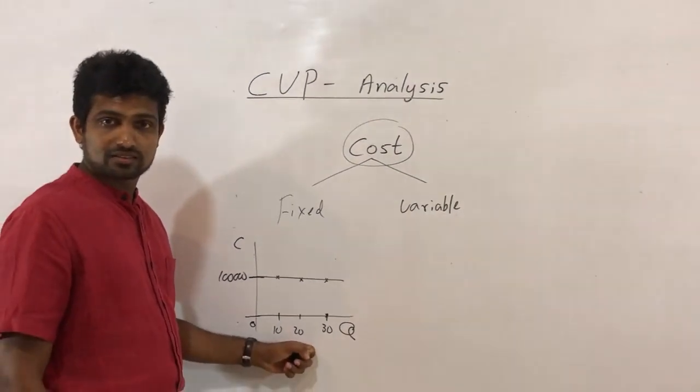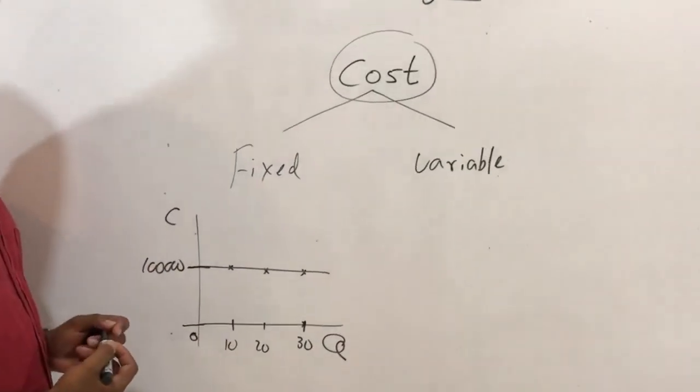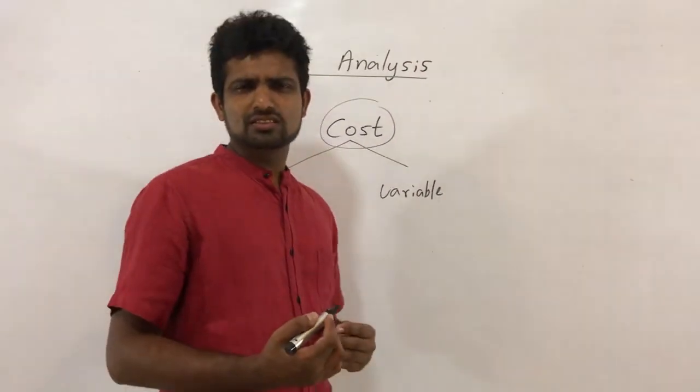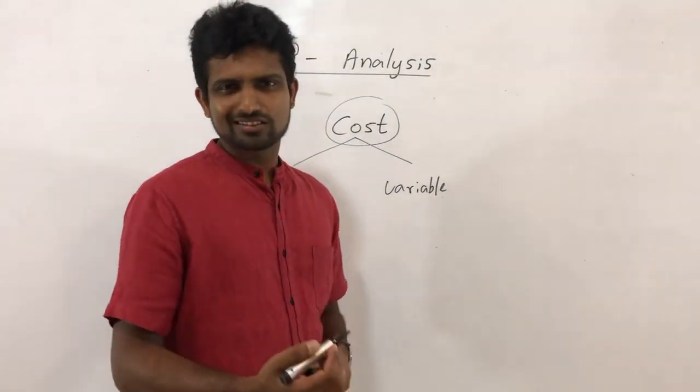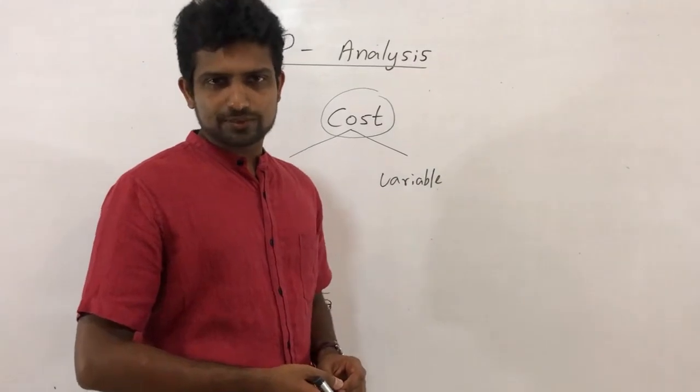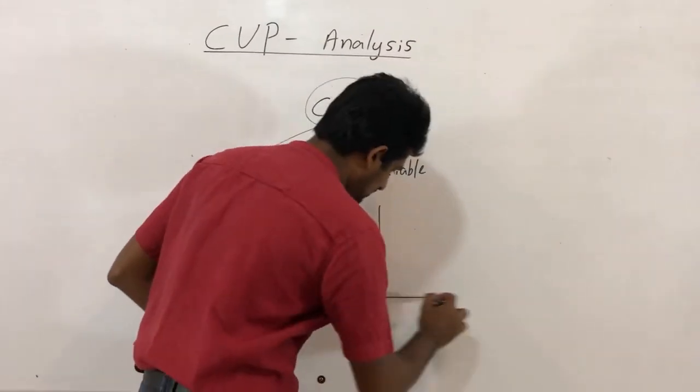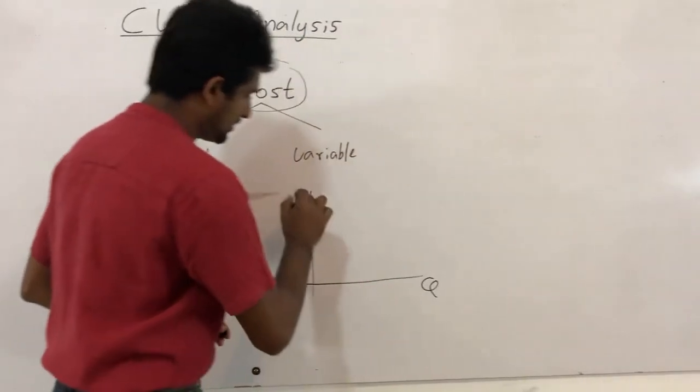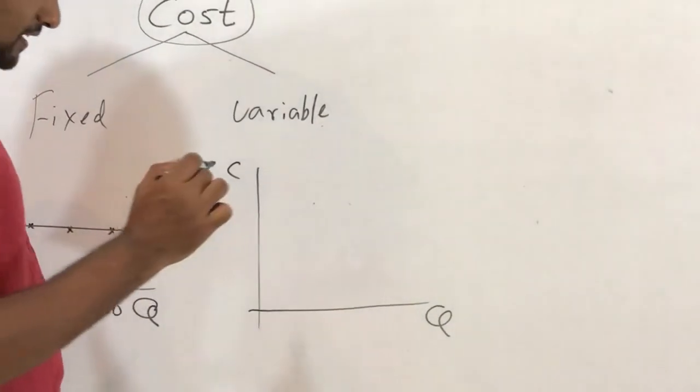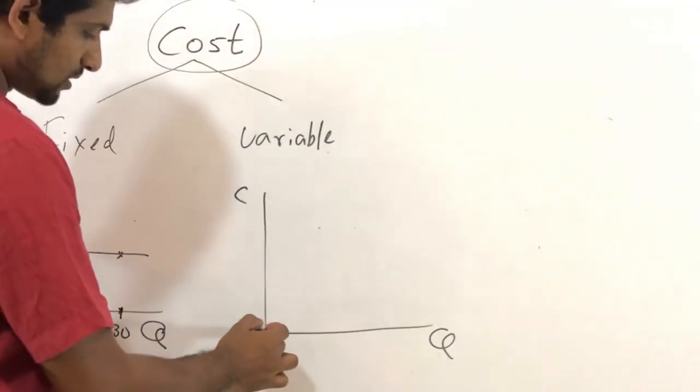So this is the behavior of fixed cost. Then what is variable cost? Variable is change, that depends on the level of production. If I show you in a diagram like this: this is quantity, this is cost. The nature of variable cost is if the level of production is zero, then no cost.